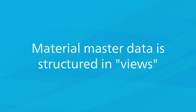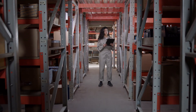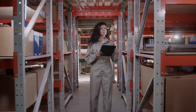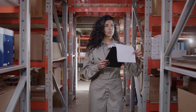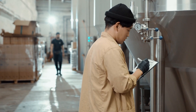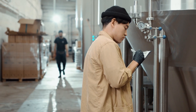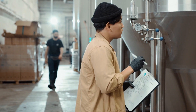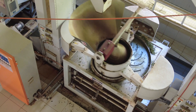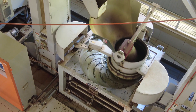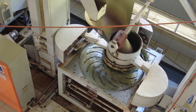For this reason, material master data is structured in so-called views that correspond to the user departments. In the material master you will find purchasing-specific, sales-specific, warehouse-specific data, and so forth. A material automatically receives a maintenance status depending on the views maintained. If you want to use a material for a process, the system checks whether the material has the required maintenance status, that is, whether the required views have been maintained.